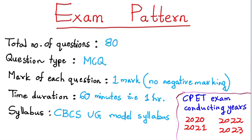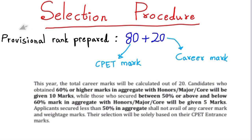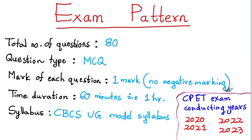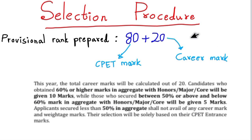Now the selection procedure: the rank is decided based on CPT entrance marks plus carrier marks. The CPT exam rank — known as the Pandye CPT Exam rank — is based on a combination of the entrance test score and the carrier assessment mark.